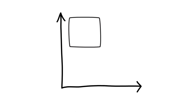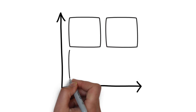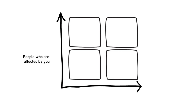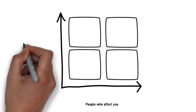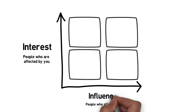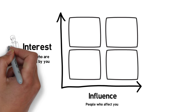A stakeholder is someone who is affected by or who will affect your business and your brand. We look at your stakeholders in relation to their level of interest and their level of influence. Interest refers to people who are going to be affected by you, and influence refers to people who are going to affect you. And of course, there are people who will have a bidirectional relationship with you.